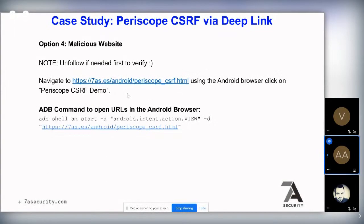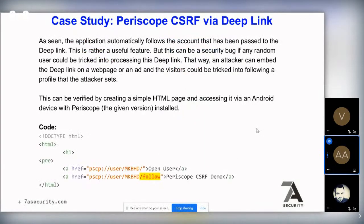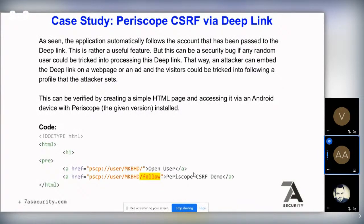Android knows the deep link has been registered by an app and opens it, passing the deep link to the app. Adding '/follow' causes it to follow any user automatically. In practice, an attacker could embed a deep link in a webpage or ad, and visitors would be tricked into following a profile the attacker sets — instead of 'Periscope CSRF Demo', it would say something like 'Win an iPad', the user clicks, and they automatically follow the user.